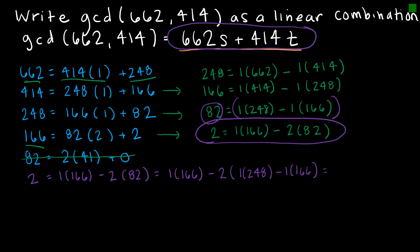I'm not going to multiply it out to find a solution — that would be working backwards. What I want to do is simplify this a little bit. I'm asking how many 248s and how many 166s do I have. If I distributed the negative 2, I would have negative 2 times 248. And negative 2 times negative 1 gives positive 2 times 166, plus the existing 166, so I have 3 times 166.